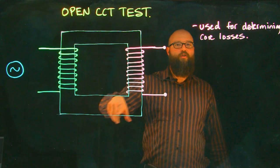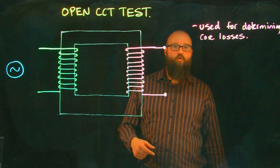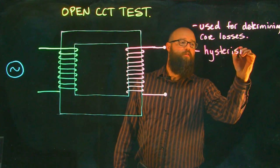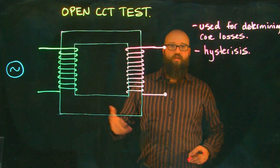That exciting current builds up our magnetic field in the core of our transformer, and because we have a magnetic field in the core, we end up with core losses. These consist of hysteresis losses, which is that magnetic flipping of domains inside the core which gives us energy lost through heat.